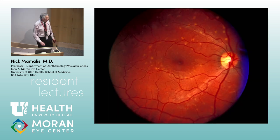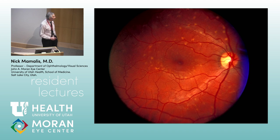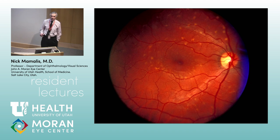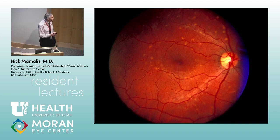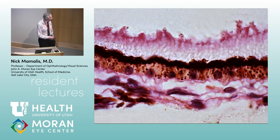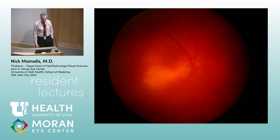Looking at this image: yellow-appearing flecks radiating out from the macula. These are pisiform — fish-shaped — flecks, hence the name. If it affects the macula it's called Stargardt syndrome; if peripheral, it's called fundus flavimaculatus. The material deposited is lipofuscin in the RPE cells. This is Stargardt disease.